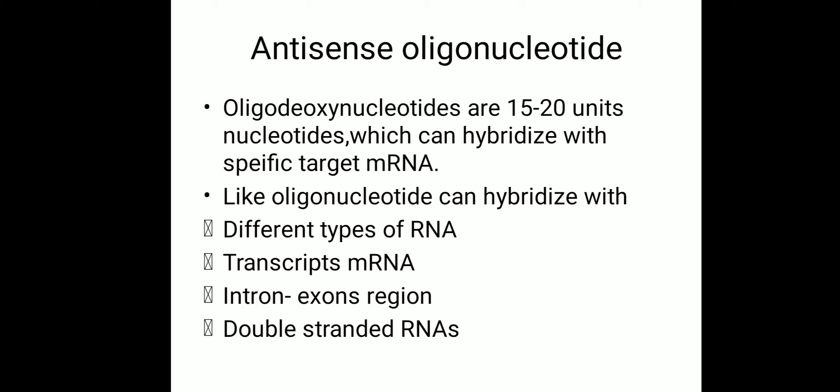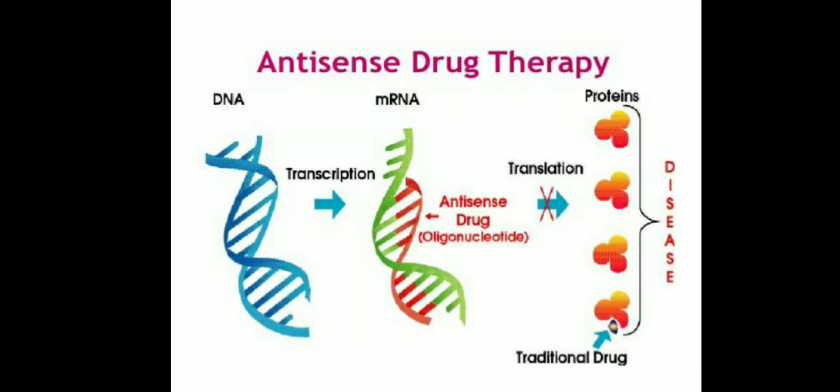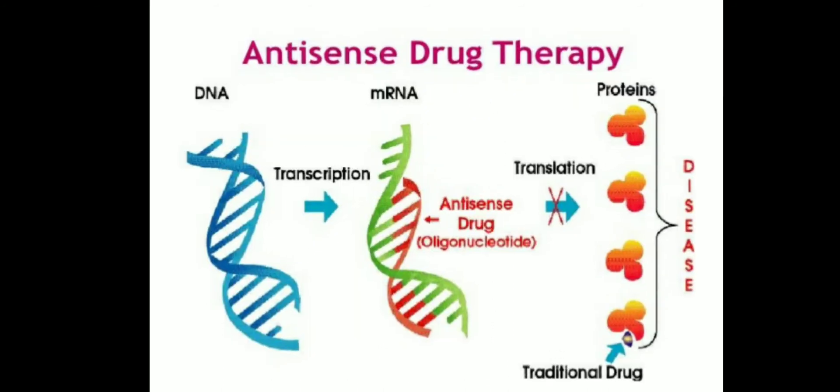It can hybridize with different types of mRNA, such as newly transcribed mRNA, and can target the intron or exon region — intron is the non-coding region and exon is the coding region. Also, double-stranded mRNA can be targeted. You may have heard that RNA is single-stranded, but in some cases double RNA is double-stranded. This picture will clarify that.